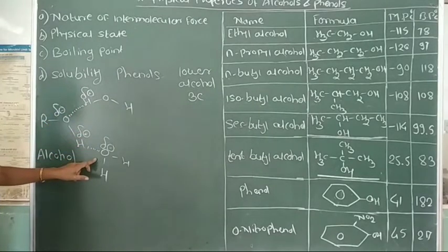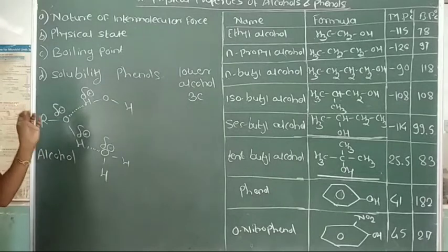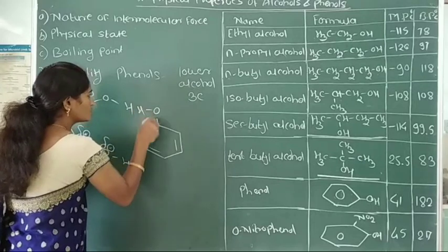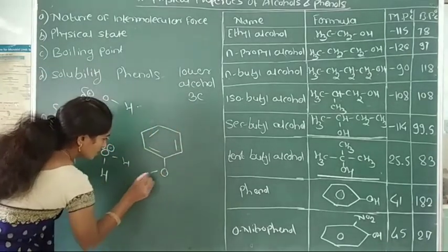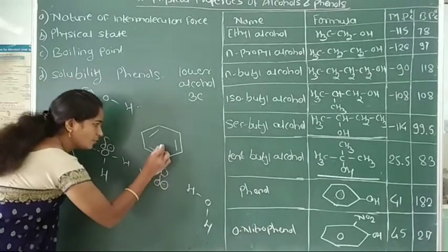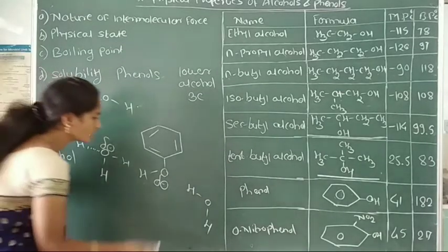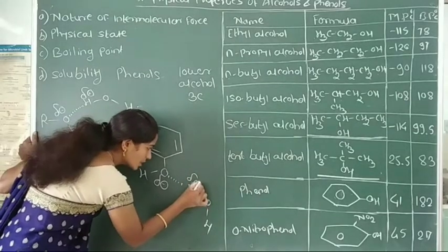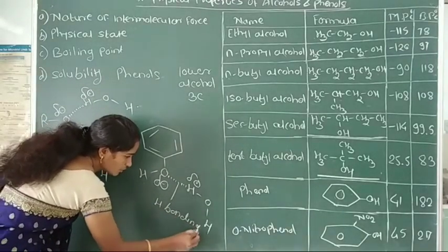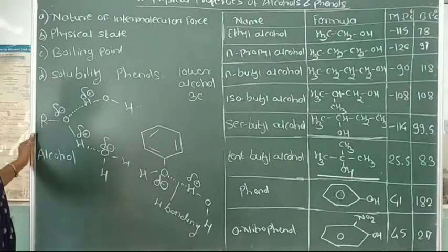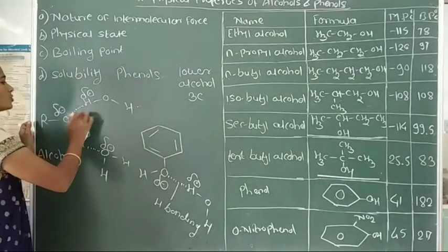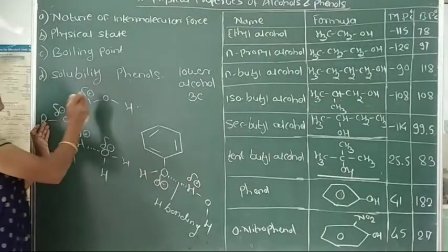Alcohols are able to form hydrogen bonding with water molecules. Similarly in phenols — the negative charge of oxygen atom in phenol forms a strong intermolecular force of attraction with the positive charge of the hydrogen atom in water. Here, formation of intermolecular hydrogen bond occurs, which is called as hydrogen bonding. Therefore, phenols and lower alcohols are soluble in water due to the ability of these alcohols and phenols to form strong intermolecular force of attraction between the alcohol/phenol and water molecules.